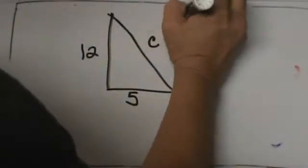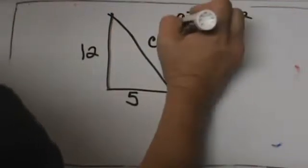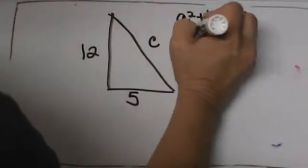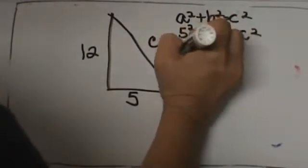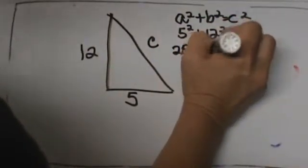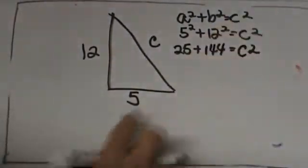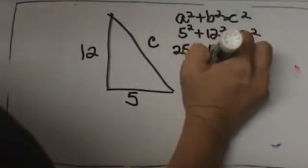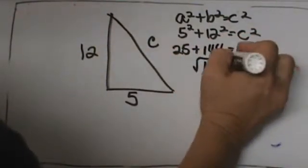We are going to take A squared plus B squared equals C squared, and we are going to plug in 5 and we are going to plug in 12 and solve for C. 25 plus 144 equals C squared. These add together to 169 equals C squared.